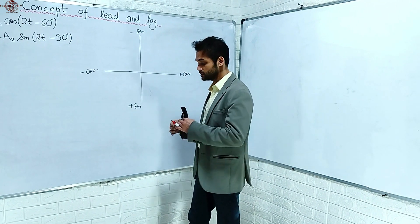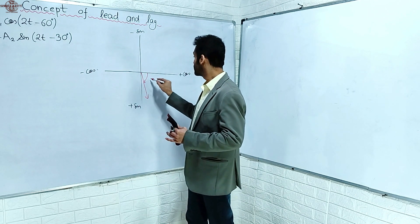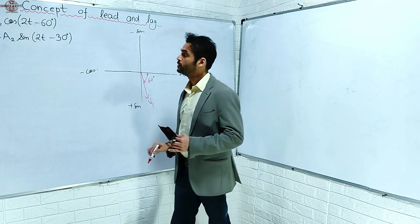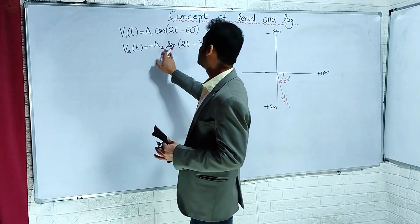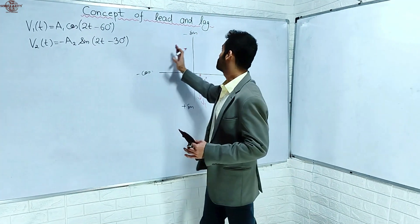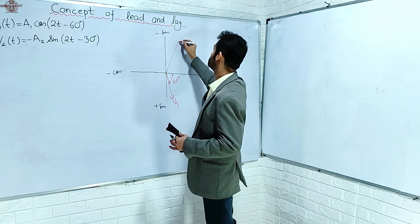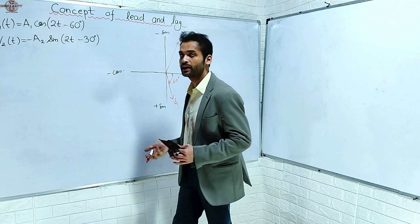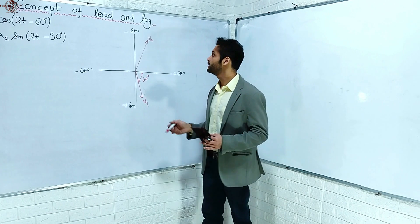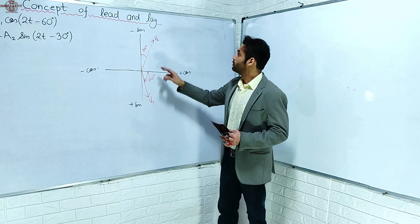Minus means it is lower than the reference. So V1 is at minus 60 degrees - here is 60 degrees, so this is V1. Similarly, V2 has a minus sign and phase minus 30 degrees. So this is V2. This is V1 and V2 plotted on the phasor diagram.